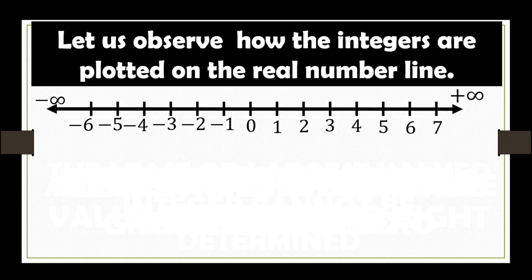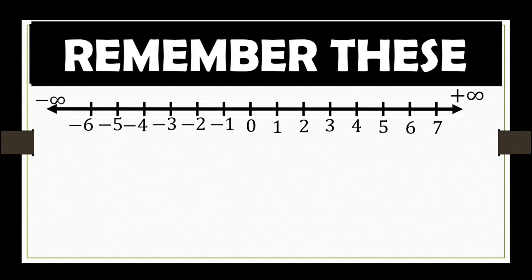So, this is our number line with negative infinity on the left side of our arrowhead and positive infinity on the right side of our arrowhead. 0 is a number that separates our positive real numbers from the negative real numbers. Bear in mind these concepts.